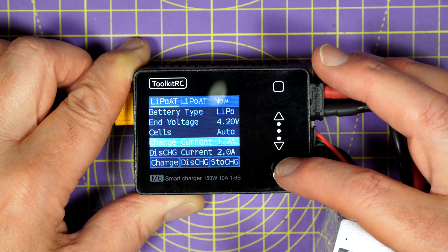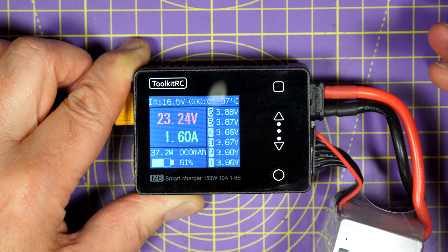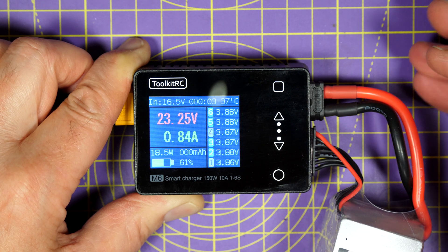Now, the display on this is very clear, given that it's so small, it's colour, and it's bright enough to use when you're outside.